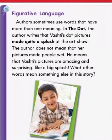Figurative language. Authors sometimes use words that have more than one meaning. In The Dot, the author writes that Vashet's dot pictures made quite a splash at the art show. The author does not mean that her pictures made people wet. He means that Vashet's pictures are amazing and surprising, like a big splash. What other words mean something else in this story?